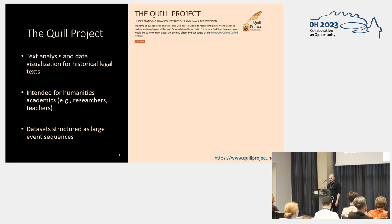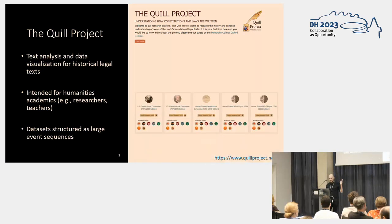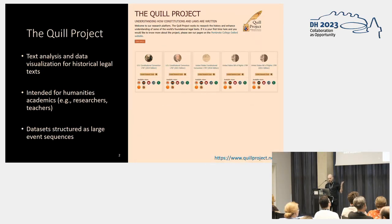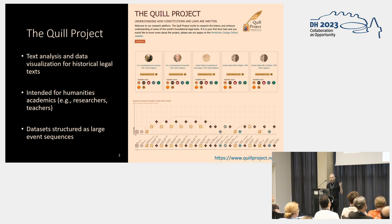Quill data sets are structured as large event sequences that can include voting records detailing all types of events that require voting for the attending participants. The right side image shows contents of the Quill platform — for instance, different conventional data sets such as the writing of the U.S. Constitution or the Bill of Rights, and an example of one of Quill's event sequences detailing all events that occurred within a session in one day.